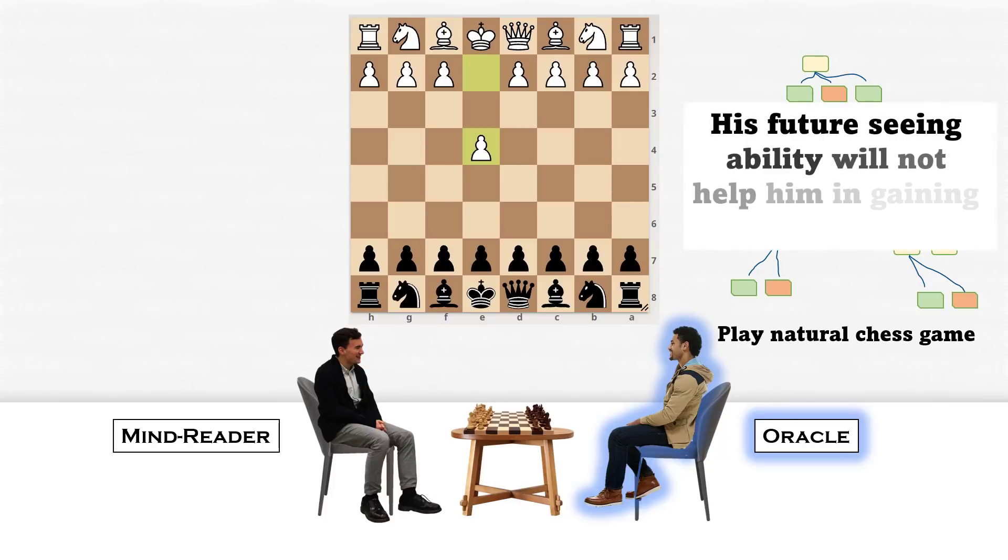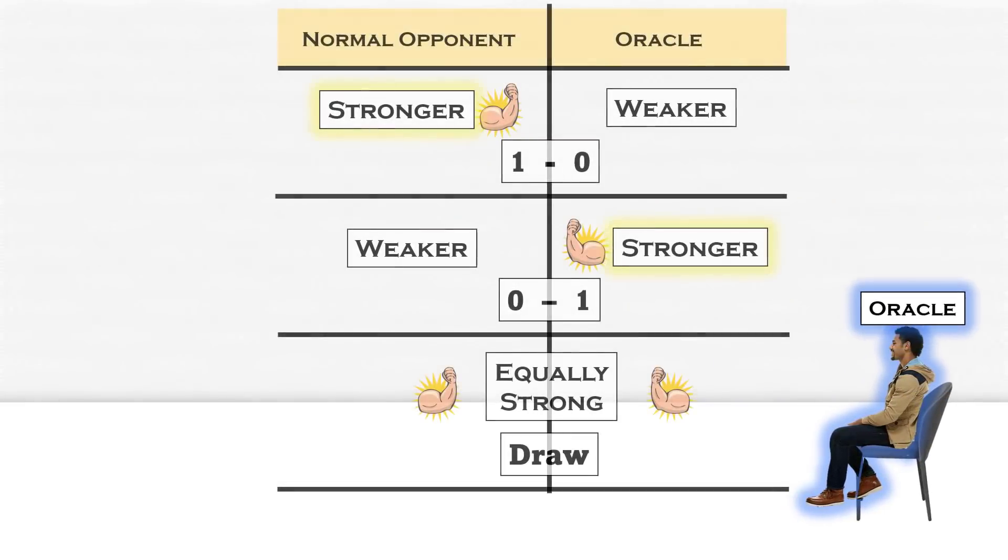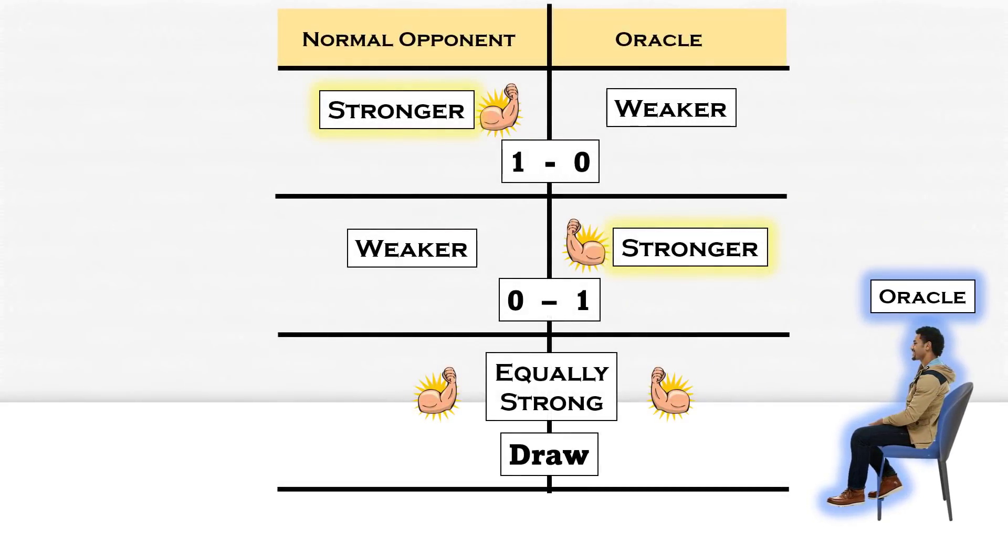That's why the Oracle has to play his natural chess game. His future seeing ability will not help him in gaining any advantage. So against a normal opponent, the Oracle will have a natural game. Whoever is stronger at chess between the two would win the game, or if they both are equally skilled at chess, then it would be a draw.